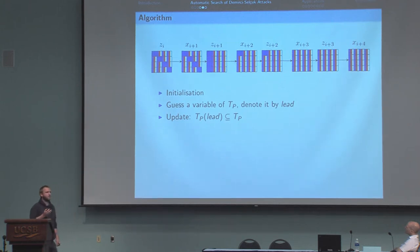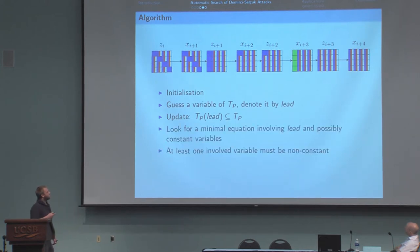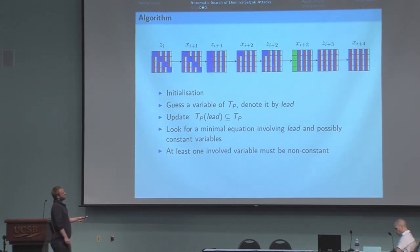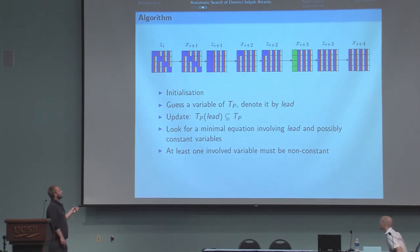Then, instead of selecting at random the next variable we will guess, we first look for minimal equations involving the first variable we guessed and variables that may be constant or are constant. If all those variables are constant, then the first variable we guessed would also be constant. So at least one of those variables should be non-constant. And we know that our first guess will be one of those variables. So we restrict the tree we have to explore.